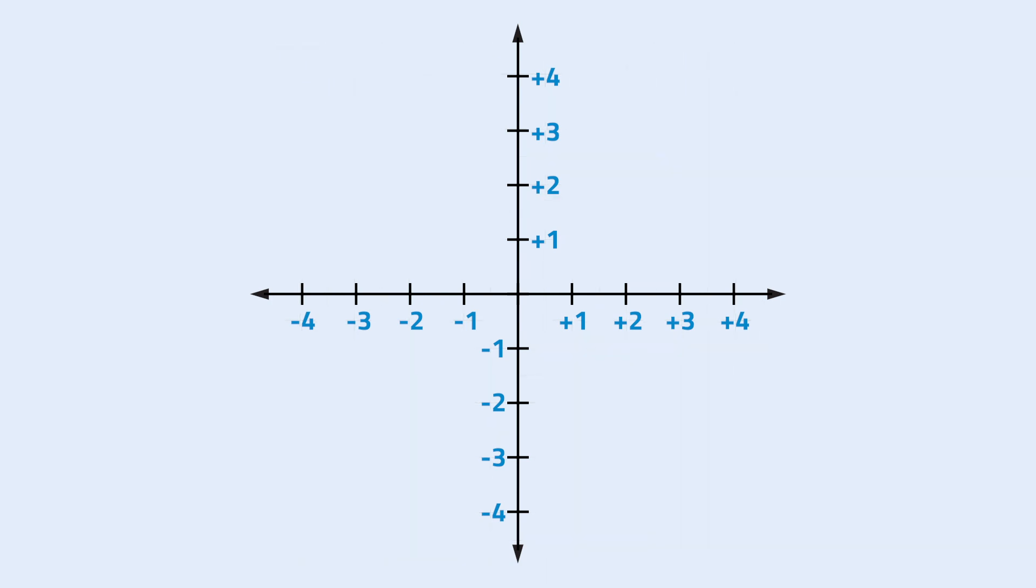If the coordinates are positive, it would mean we need to go right of the x-axis and go up on the y-axis. If the coordinates are negative, we need to go left for the x-axis and down for the y-axis.